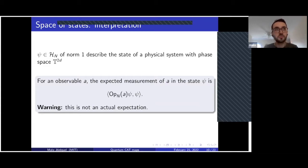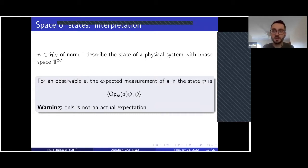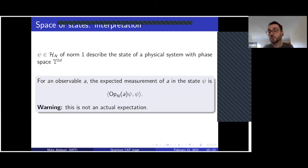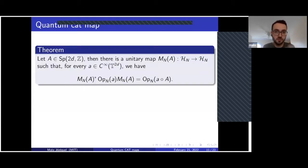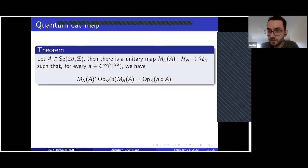Now we have some tools to describe the state of the system, but we want a dynamic. Since we want something that acts on elements of norm one in our space, we want a unitary operator. There are many ways to construct that, but if you have a matrix that is integer-valued and symplectic, you can associate to it a unitary map on the space of states satisfying the Egorov relation.